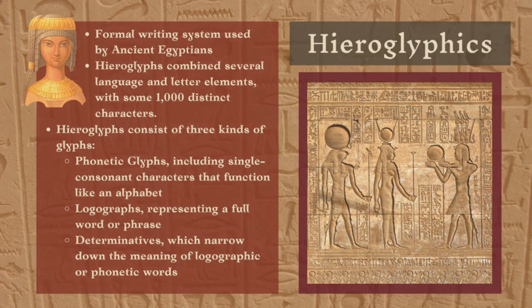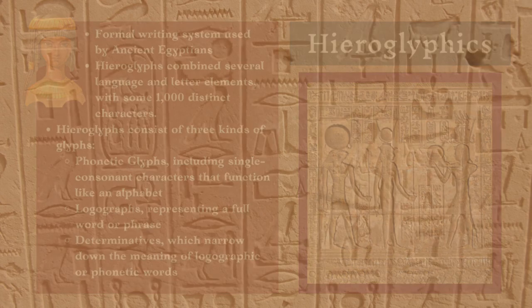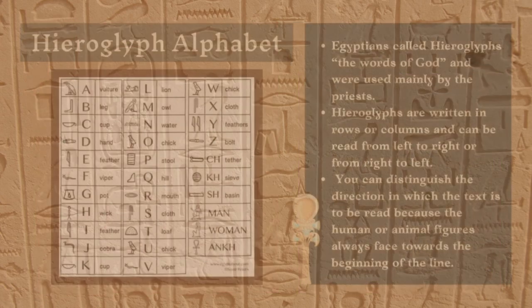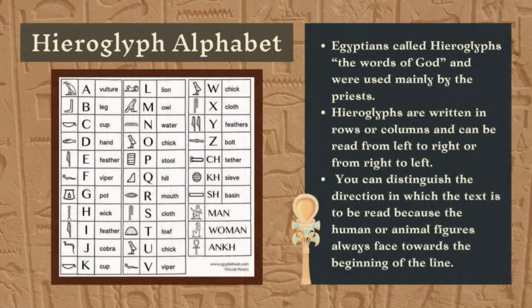Ancient Egyptians called hieroglyphs the words of god, and they were used mainly by the priests. Hieroglyphs are written in rows or columns and can be read from left to right or from right to left. You can distinguish the direction in which the text is to be read because the human or animal figures always face towards the beginning of the line.